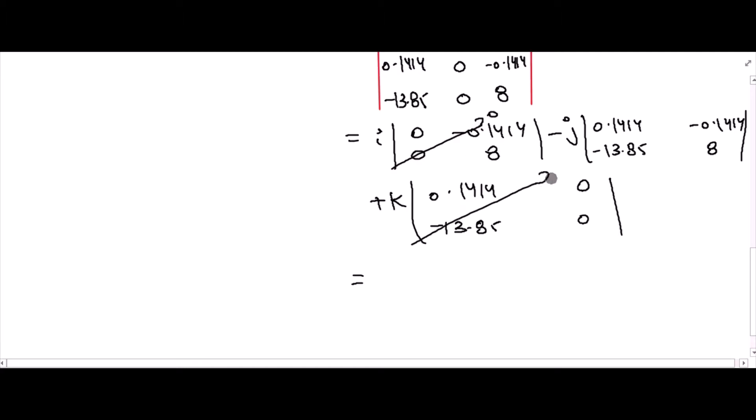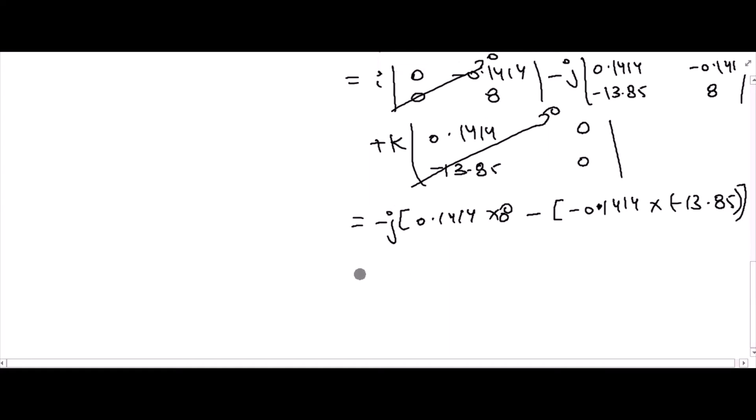If you solve this, then this term is 0, this term is also 0. We have negative j times 0.1414 into 8 minus negative 0.1414 into negative 13.85, so the j component is approximately 0.828 Newton-meters. This is the answer to this problem.